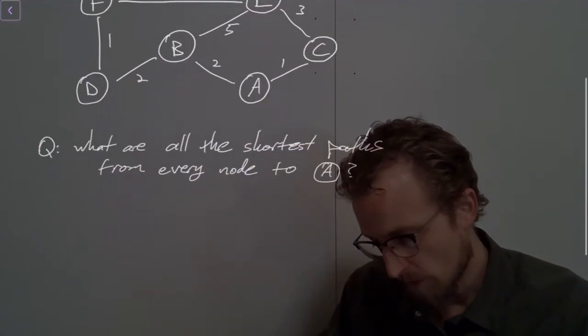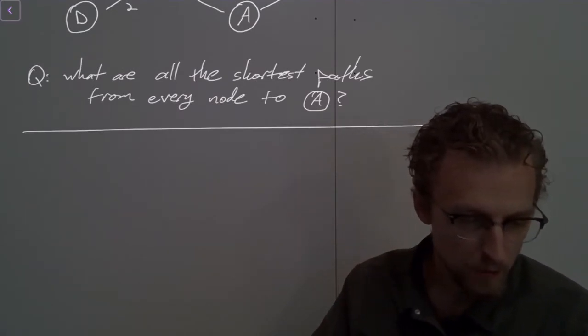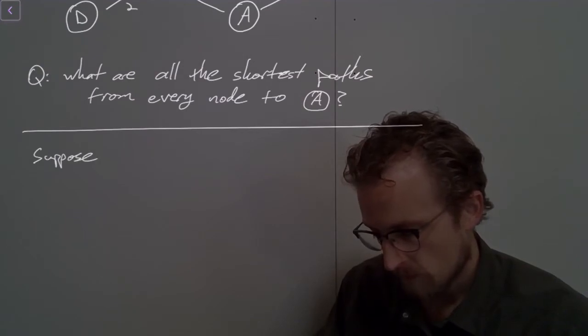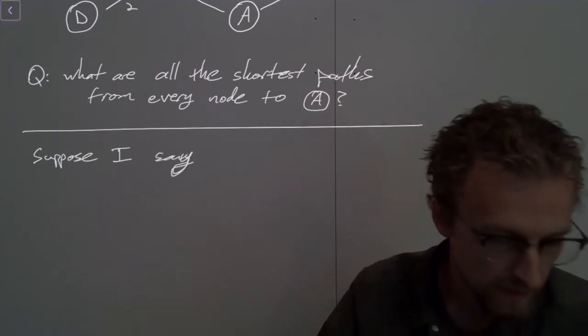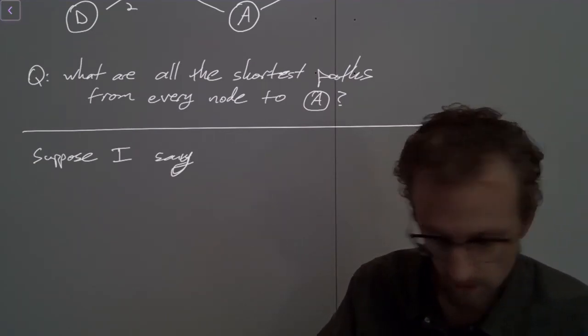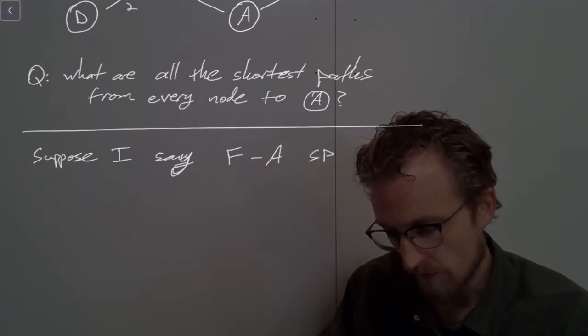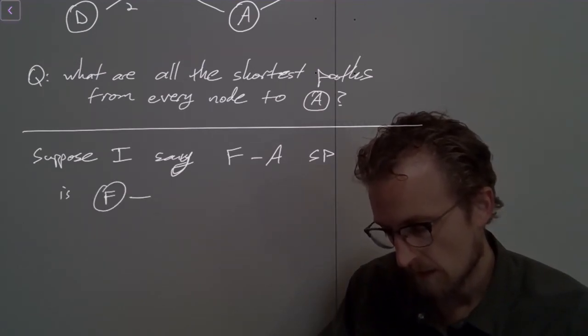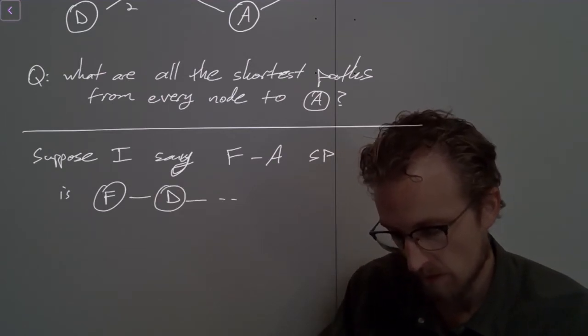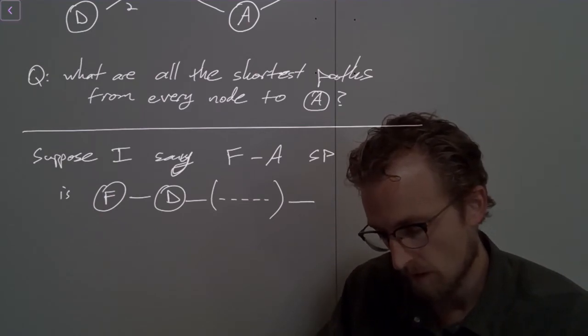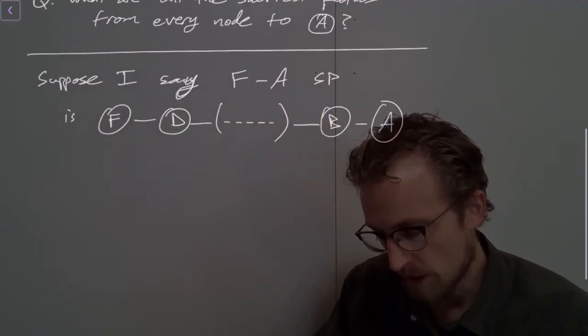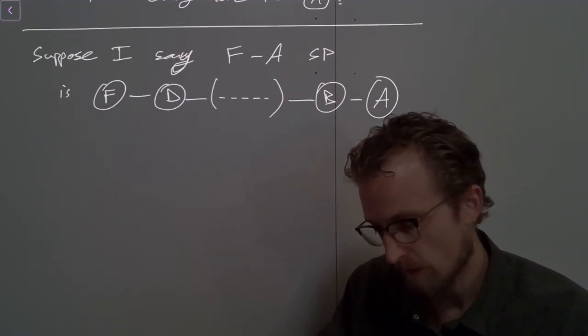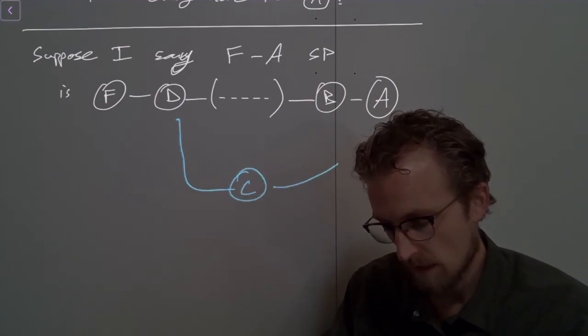So suppose I gave you a shortest path that goes from F to A, and I said it looks like this. Suppose I say the F to A shortest path - SP, I'll use that to mean shortest path for now - is something like this. It's F, and then D, and then some other nodes, other stuff in here. And then from here it goes to B, and then to A. Suppose this is the case, and then I ask you, what's the shortest path from D to A? And you say, aha, the shortest path from D to A goes over here, goes to node C, and then it just goes directly to A.